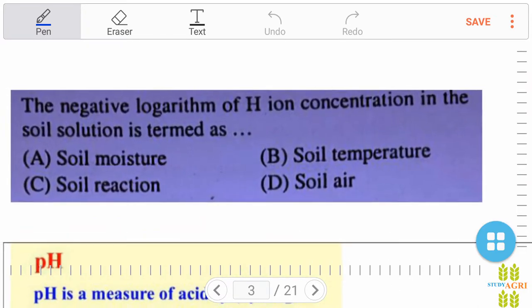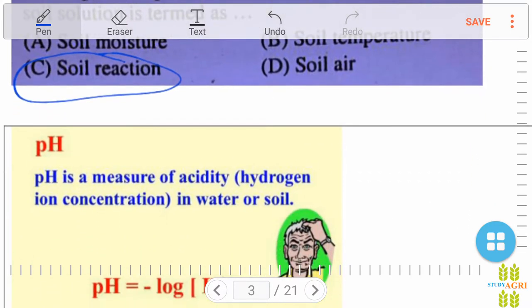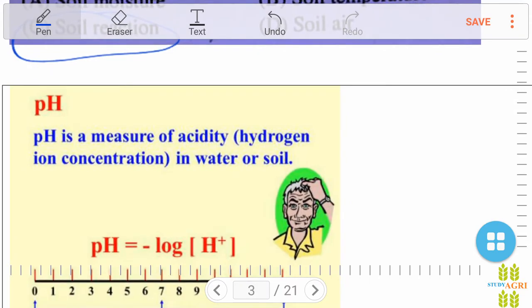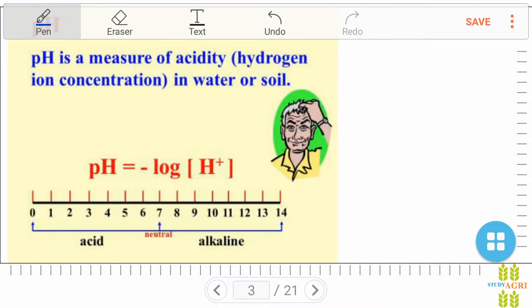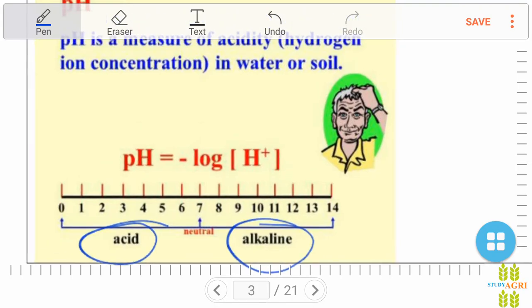Next question: the negative logarithmic of H ion concentration in the soil solution is termed as soil moisture, reaction, temperature, or air? Right option is soil reaction. We also know what pH is. pH means potential of hydrogen. pH is a measure of acidity in water or soil. If pH level is less than 7, it is known as acid. If it is more than 7, it is known as alkaline.